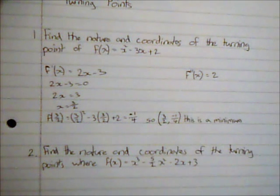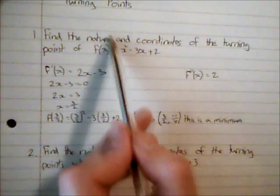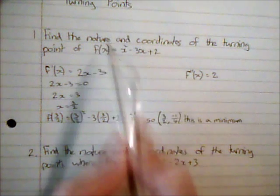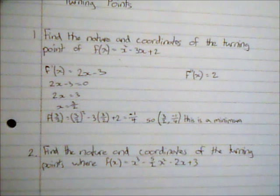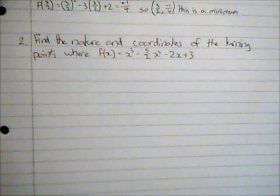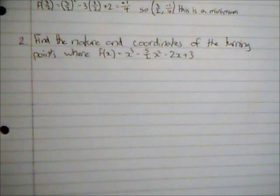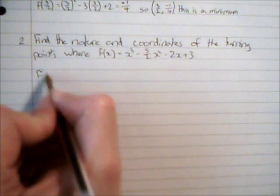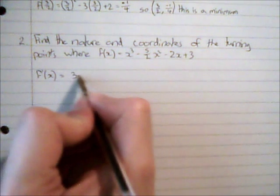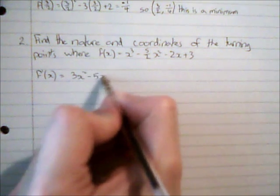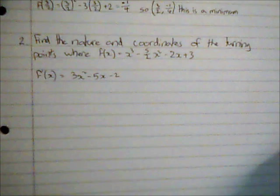Because the second derivative was positive. If we consider what this graph looks like, it's a quadratic and it goes that way around, so we can hopefully recognize it's going to have a minimum point from previous knowledge of quadratics. For the second question we're going to go through a very similar process, looking for the nature and coordinates of the turning points — plural this time — because I've got a cubic. So I'm going to differentiate, and that gives me 3x squared subtract 5x subtract 2.